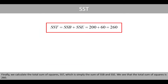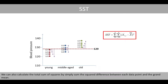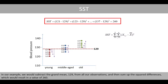Finally, we calculate the total sum of squares, SST, which is simply the sum of SSB and SSE. We see that the total sum of squares is 260. We can also calculate SST directly by summing the square differences between each data point and the grand mean. In our example, we subtract the grand mean of 129 from all our observations and sum the square differences, which results in a value of 260.